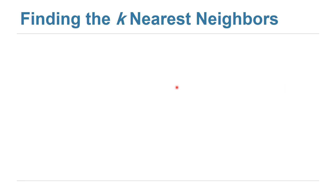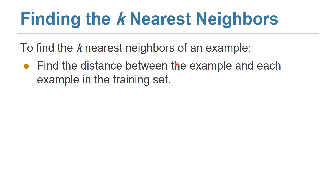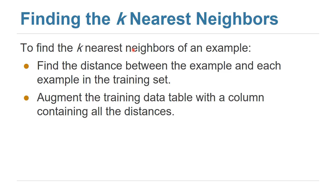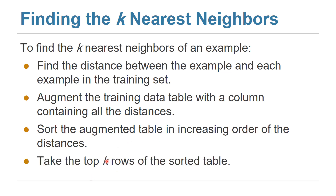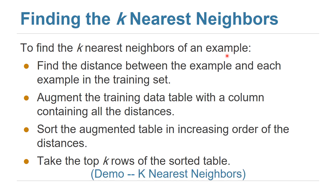Let's discuss in detail how we can find the K nearest neighbors. The first step is to find the distance between the example and each example in the training set. We add a column to the training data table containing all computed distances, then sort the table in increasing order of distances so we can get the top K rows — which will be the K nearest neighbors of the given example.